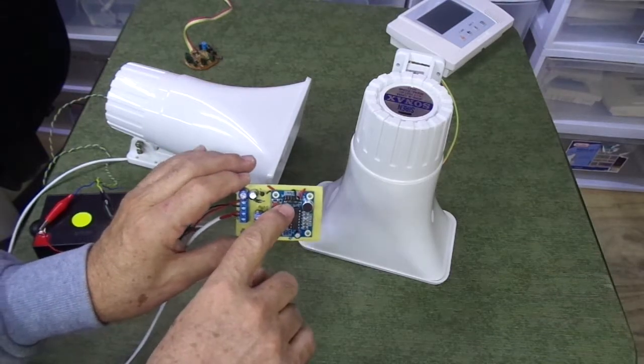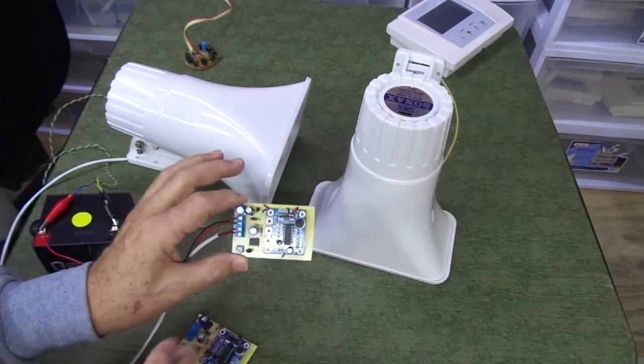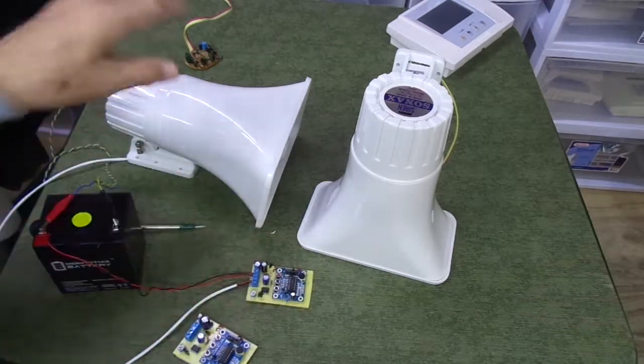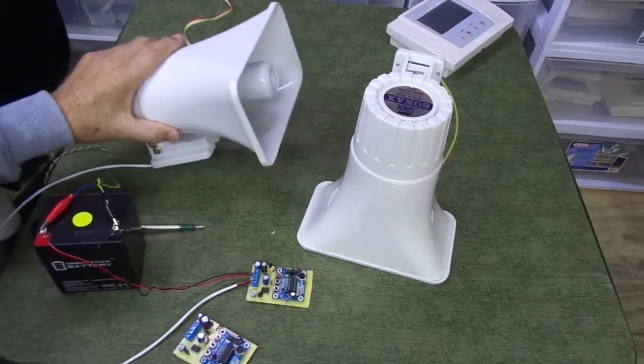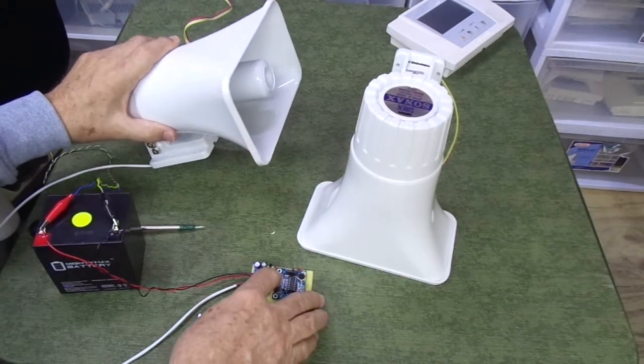By moving this little jumper here, whenever power is applied it just comes on, so you can connect it straight to your alarm panel. And now then, instead of just a standard whooping siren, I have the voice siren with a warning like this.